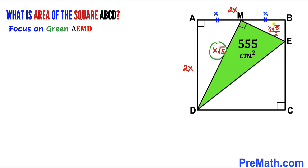For the final step, we calculate the area of square ABCD. Recalling the area of a square formula — area = S², where S is the side length — and since our side length is 2X, the area equals (2X)² = 4X². Substituting X² = 444, we get 4 × 444 = 1776. Therefore the area of square ABCD is 1776 centimeter square.